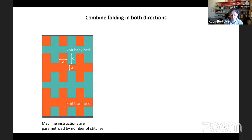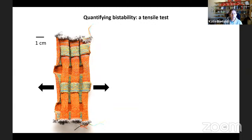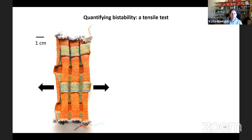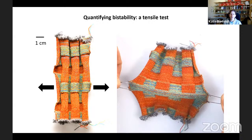By combining folds in both directions, we get the sample. When we pull on the sample, we can transform vertical folds into horizontal folds, and they remain there — the fold remains horizontal. When we test this in an actual testing device, we see that this transformation from vertical to horizontal comes together with a sharp drop in force. This drop is associated with multi-stability — similar to what we were seeing at the very beginning looking at the force-displacement curve of origami structures, where a drop in force indicates bistability.